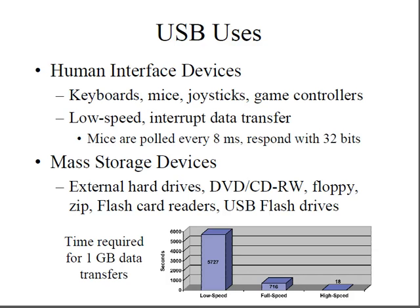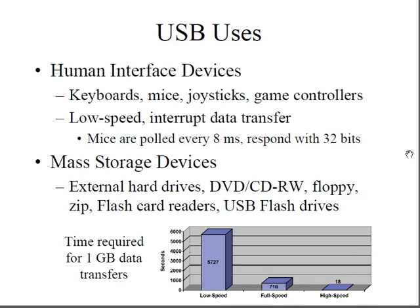USB uses include human interface devices like keyboards, mice, joysticks, and game controllers, which use low-speed interrupt transfers — for example, mice are polled every eight milliseconds and respond with 32 bits. USB also supports mass storage devices such as external hard drives, DVD-RW, CD, floppy, zip drives, flash card readers, and USB flash drives. For 1 GB of data, low-speed transfer takes much longer, while high speed takes only 18 seconds.